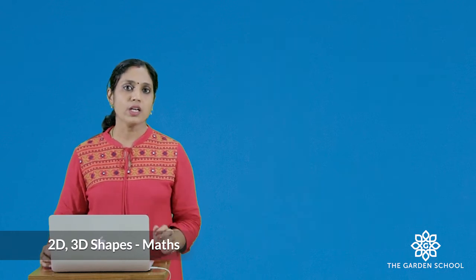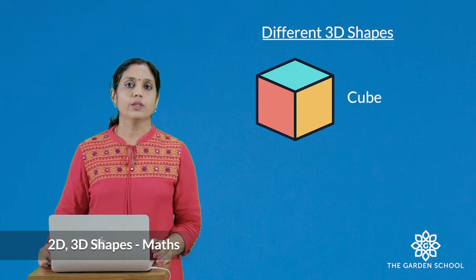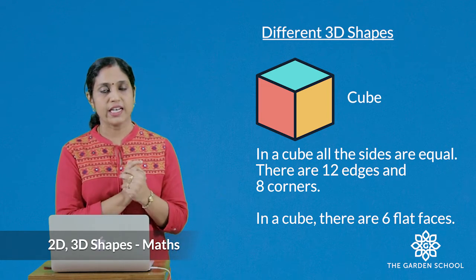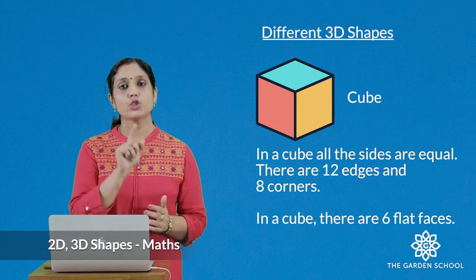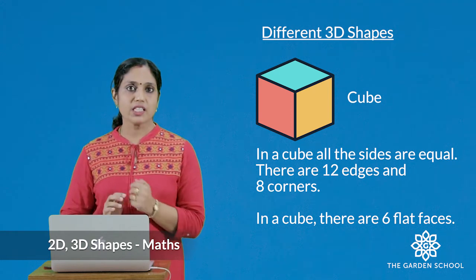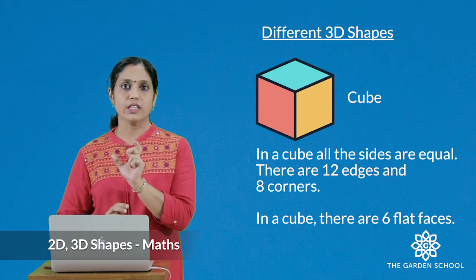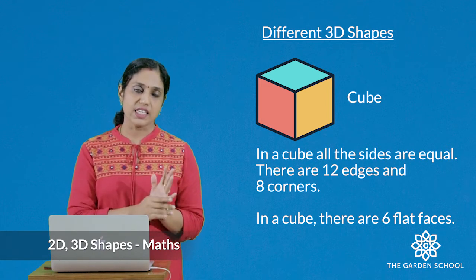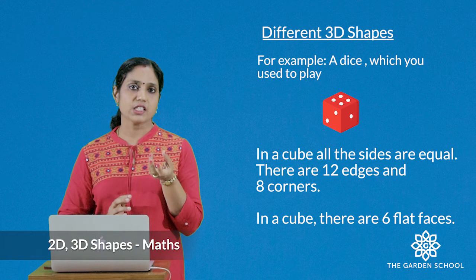Now let's look at different 3D shapes. The first one is cube. In a cube all the sides are equal. In a cube there are 12 edges, eight corners, and there is also a face. Face means a surface of the object — there may be a flat face or a curved face. In a cube there are six flat faces. So a cube has six flat faces, 12 edges, and eight corners. For example, a dice which you use to play is cube in shape.